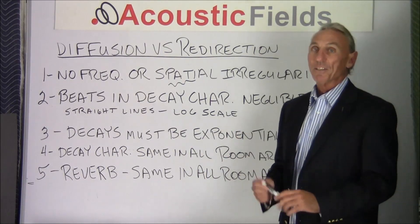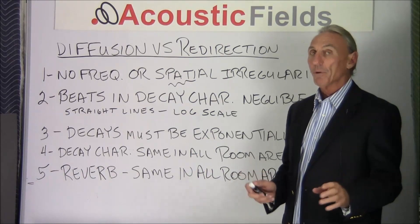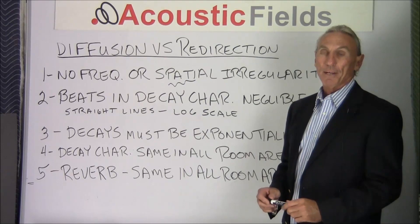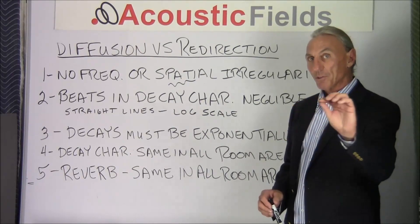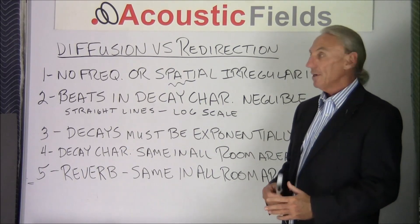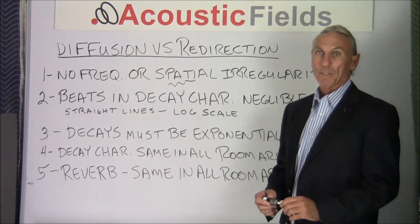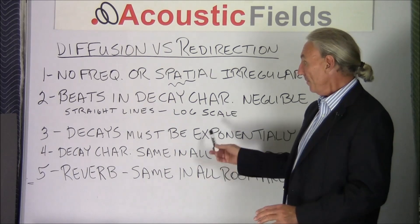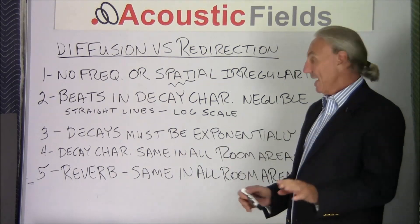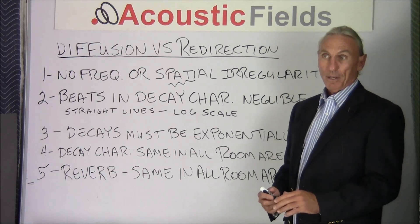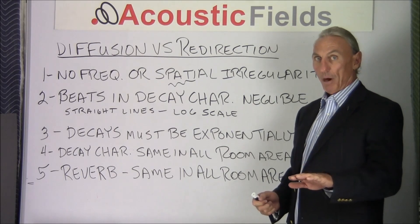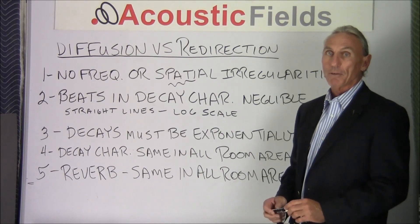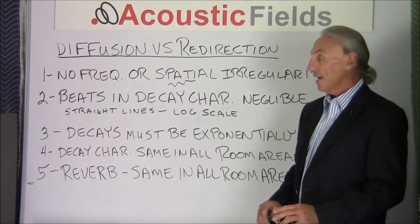The second condition: the beats and the decay characteristic of our room must be negligible. On a log scale it must be a straight line, so the beats and decay characteristic must be negligible — not noticeable at all. Third, the decays must be exponentially perfect. We can't have big pauses and hiccups in the curves — they must be exponentially perfect.